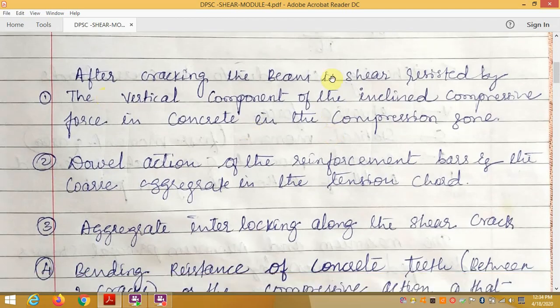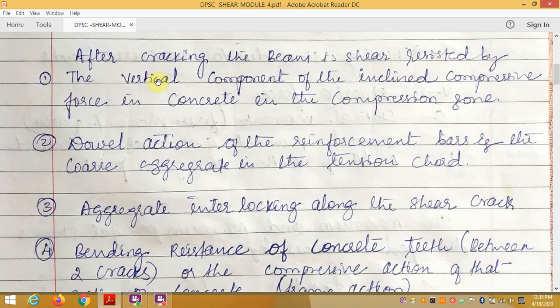After cracking, the beam shear is resisted by first, the vertical component of the inclined compressive force in the concrete in the compression zone. Second, the dowel action of the reinforcement bars and the core aggregate in the tension zone.